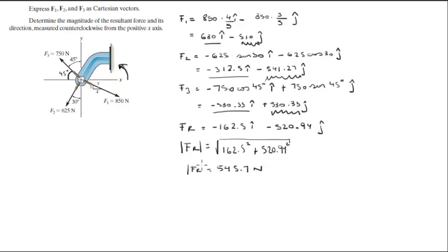To calculate angle theta, note that with components negative 162 and negative 520, the vector points into the third quadrant. We're calculating this angle from the positive x-axis. The calculation starts with the tangent inverse